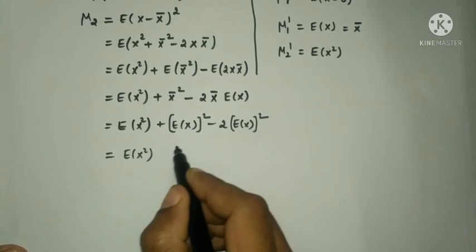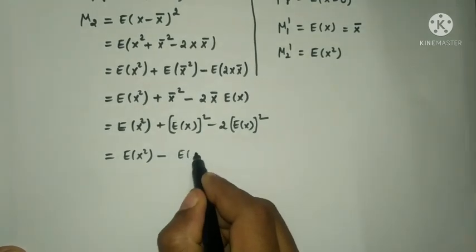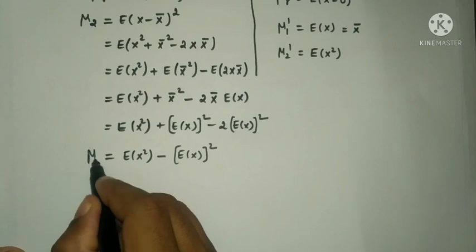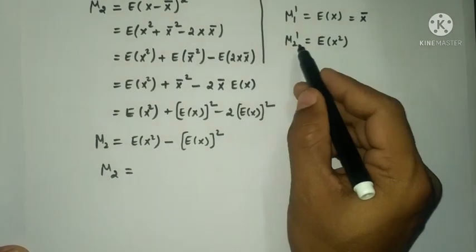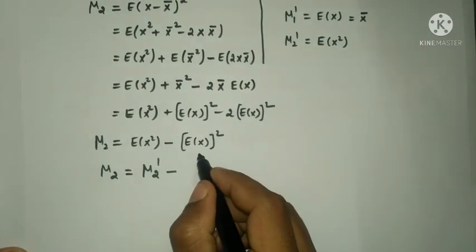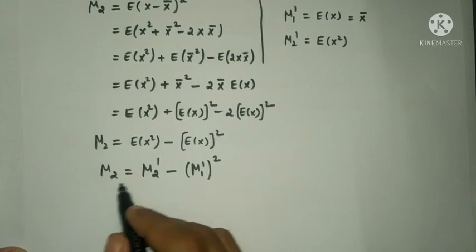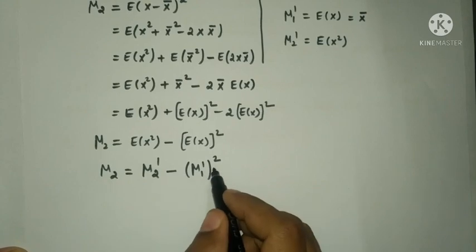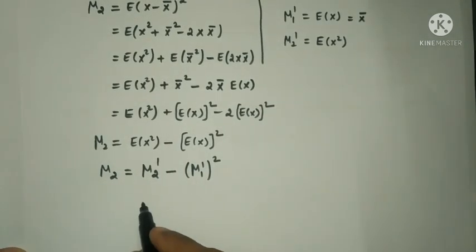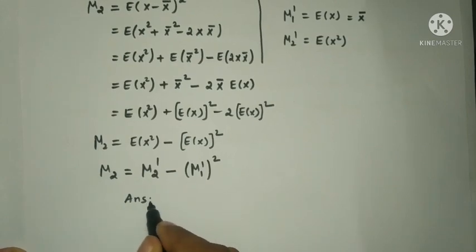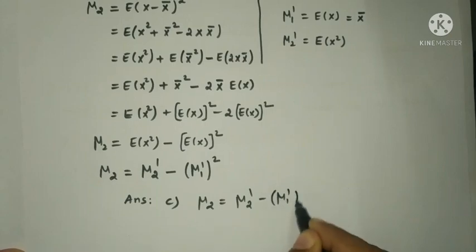That is equal to E[X²] + E[X]² - 2·E[X]² = E[X²] - E[X]². So μ₂ = E[X²] - [E(X)]², which is the variance. The answer for μ₂ is μ₂' - (μ₁')².